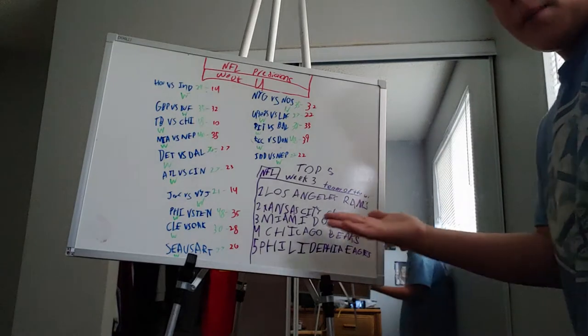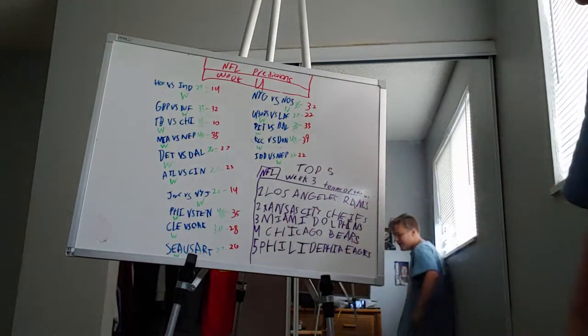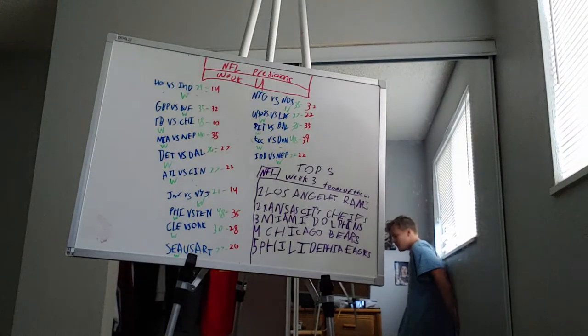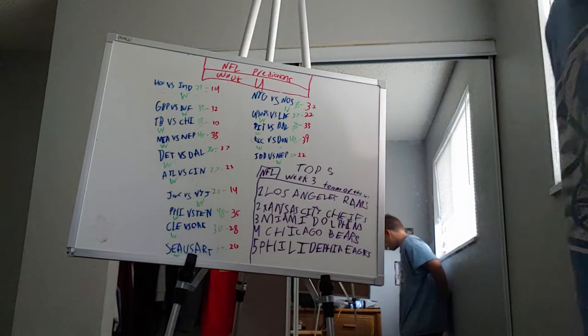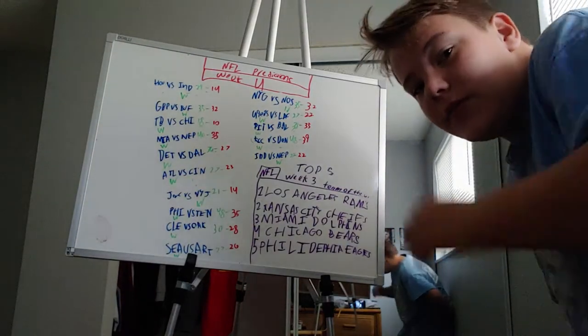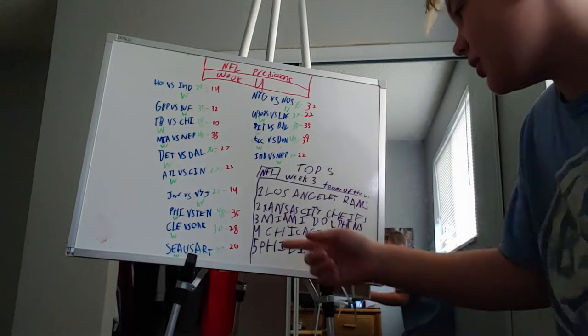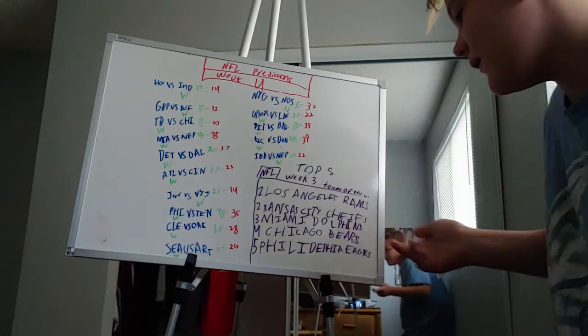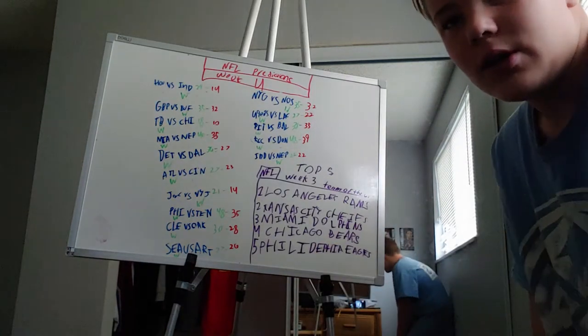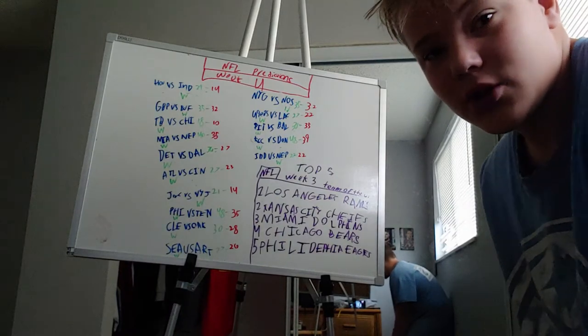I wanted to fill out my board, so I made this top five teams of last week. Number one was the Los Angeles Rams. They're the best team in the league. Kansas City Chiefs at two. Miami Dolphins at three. Chicago Bears at four. And Philadelphia Eagles at five. Yeah, I mean, that's it, NFL Week 4 predictions.